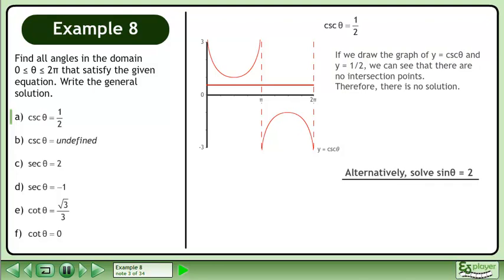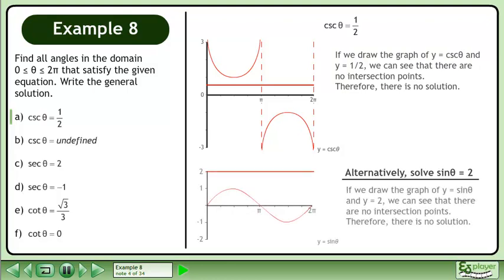Alternatively, solve sine θ equals 2. If we draw the graph of y equals sine θ and y equals 2, we can see that there are no intersection points. Therefore, there is no solution.